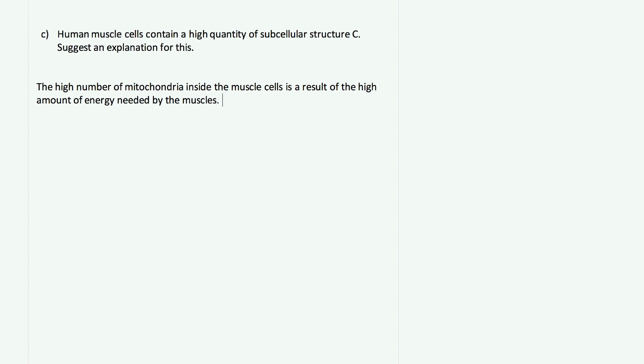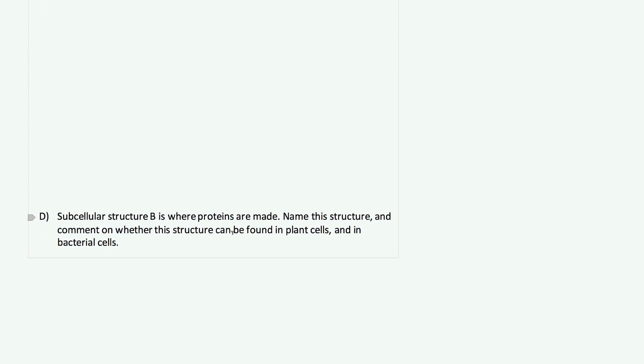Aerobic respiration occurs within the mitochondria, and a high quantity of mitochondria allows the muscles to produce a large amount of energy required for movement. So that's part C done.